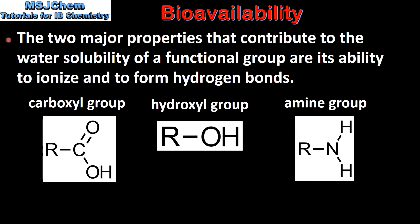Next we look at the effect of the functional group. The two major properties that contribute to the water solubility of a functional group are its ability to ionize and to form hydrogen bonds. Here we have three examples of functional groups that are able to form hydrogen bonds with water molecules: the carboxyl group, the hydroxyl group, and the amine group. The carboxyl and hydroxyl groups both have oxygen atoms bonded to hydrogen atoms. The amine group has a nitrogen atom bonded to a hydrogen atom. Therefore each functional group is able to form hydrogen bonds with water molecules.